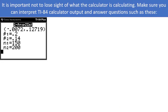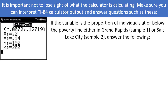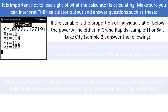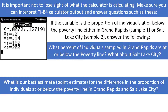It is important not to lose sight of what the calculator is calculating, since we are not actually doing any by-hand calculations. If the variable is the proportion of individuals at or below the poverty line, either in Grand Rapids or Salt Lake City, take a moment to pause the video and answer the following two questions. I'll be back in just a moment with the answers.